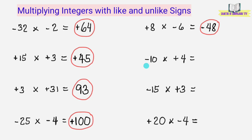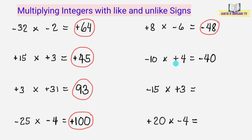Eto naman, negative 10 times positive 4. 10 times 4 equals 40. At lalagyan natin ito ng negative sign, dahil magkaiba yung signs ng numbers na ating iminultiply. Kaya yung product ay negative integer. Ang answer ay negative 40.